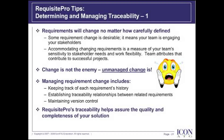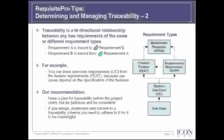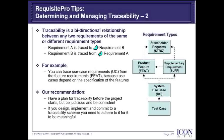IBM Rational's Requisite Pro traceability feature will help to ensure the quality and completeness of your solution. Traceability is a bidirectional relationship between any two requirements of the same type or different types — requirement A can be traced to requirement B, and requirement B can be traced from requirement A.